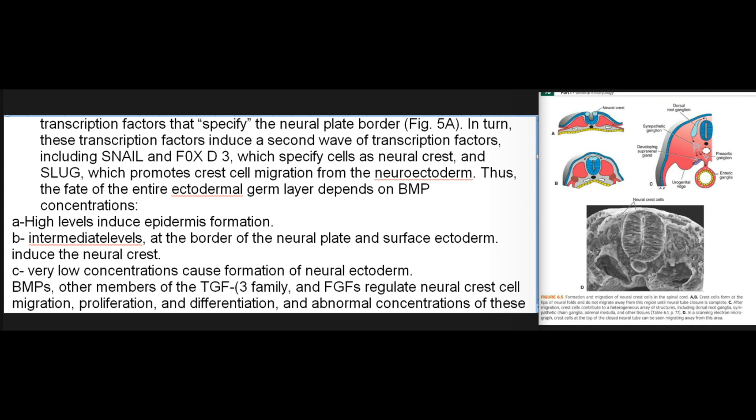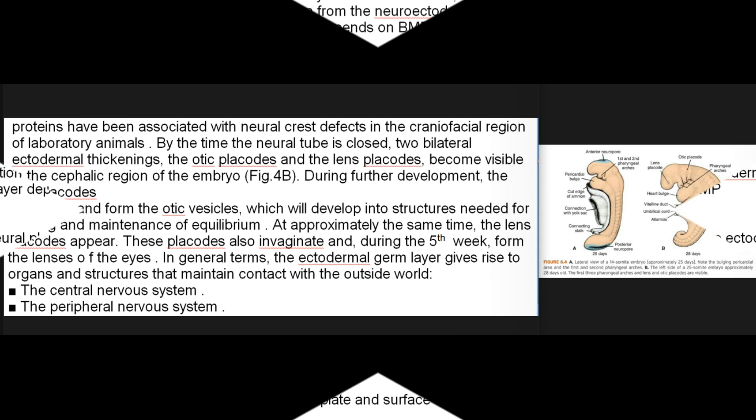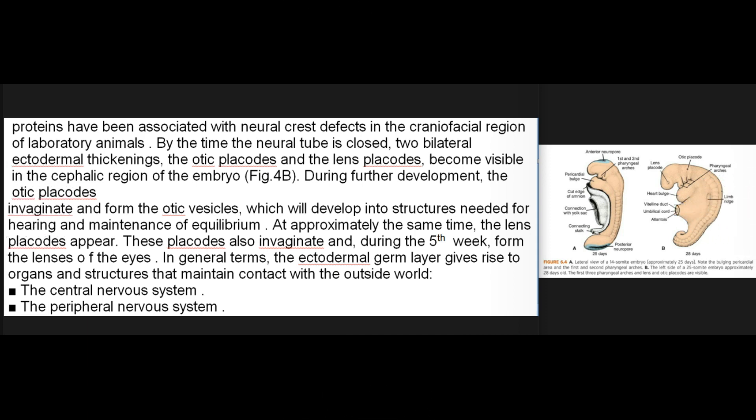BMPs, other members of the TGF-β family, and FGFs regulate neural crest cell migration, proliferation, and differentiation, and abnormal concentrations of these proteins have been associated with neural crest defects in the craniofacial region of laboratory animals.